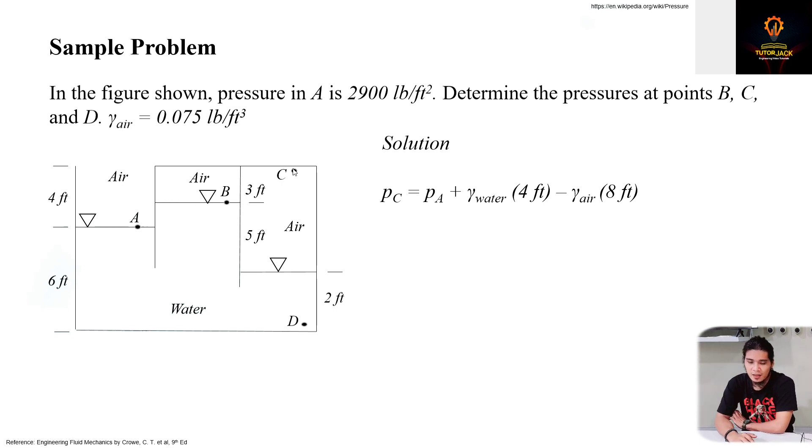That's an increase in elevation. Therefore, we'll subtract from the pressure. So the fluid there is air. And our elevation is 8 feet. So from here to here, that's 8 feet, 3 plus 5.